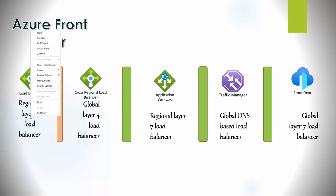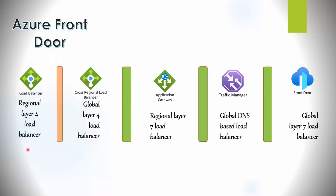So this one here is tied to a specific region — this load balancing solution — and the Application Gateway as well, which is a layer 7 load balancer, is also tied to a specific region.